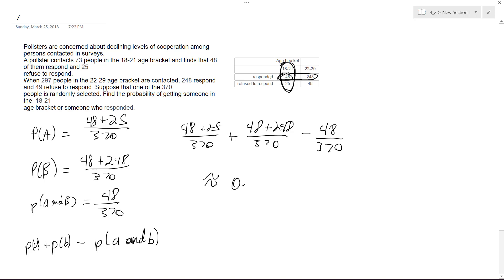What we get is approximately 0.867568, and rounding this to the thousandths we get 0.868, or approximately 86.8 percent chance that we pick someone in the 18 to 21 bracket or someone who responded.